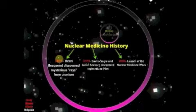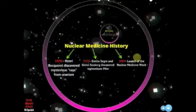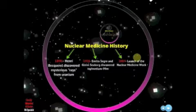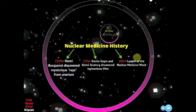Now I'm going to give a history of nuclear medicine around the world. First of all, Henri Becquerel was a scientist who discovered radiation from uranium itself in 1896. In 1938, the most used radiotracer in our department, known as Technetium-99m, was discovered. In 2004 was the first time they launched Nuclear Medicine Week — not in Kuwait but in the world. In Kuwait it was first launched in 2010.